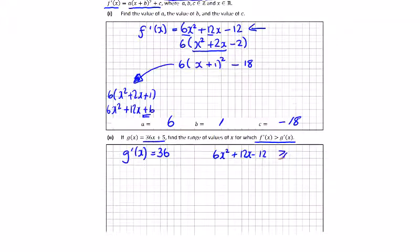Greater than 36, so bringing the 36 across, 6x squared plus 12x minus 48 is greater than 0. Dividing by 6, we're going to get x squared plus 2x minus 8 is greater than 0.